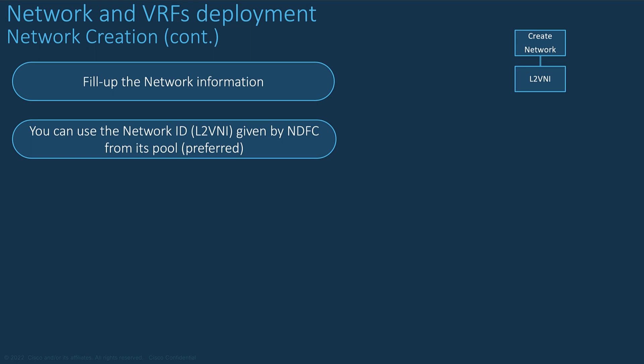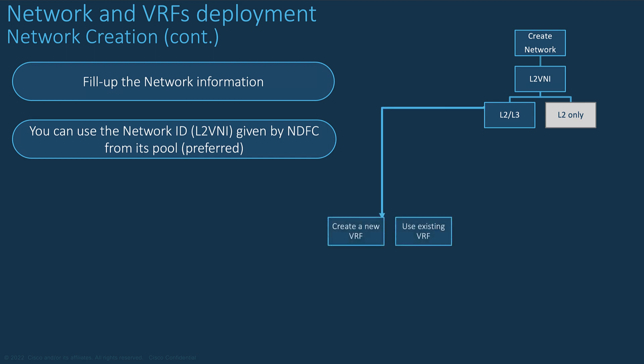Start with the Layer 2 VNI. NDFC provides you the Layer 2 VNI that it will consume from its pool, configured under the fabric settings. If you prefer, you can use your own VNID, but the recommendation is to leave NDFC to consume the predefined resources automatically. You choose if you want Layer 2 only, or a Layer 2 network with its default gateway in a particular tenant — the VRF. You can give a name for that network or leave the name that comes automatically. If you select Layer 2 with Layer 3, then you need to enter the VRF.